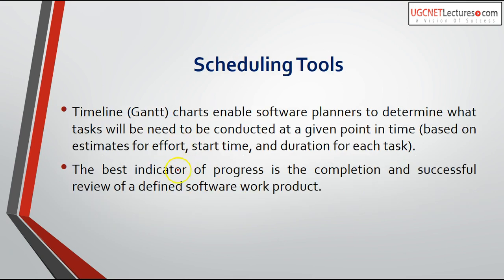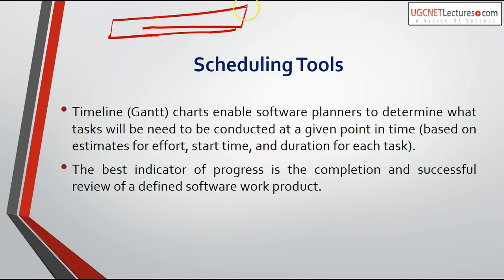Another tool is the timeline, or Gantt chart. A Gantt chart enables the software planner to determine what tasks need to be conducted at a given point in time. Similar to what we've seen in operating systems, on one axis we have time and on the other we have processes or activities, showing the start time and finish time of each. From these activities we design a Gantt chart that tells us at what time the project will complete. The best indicator of progress is the completion and successful review of a defined software product.